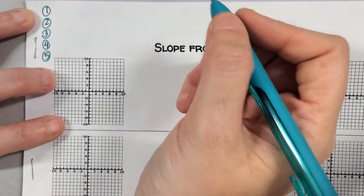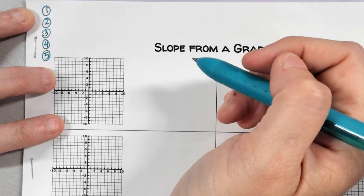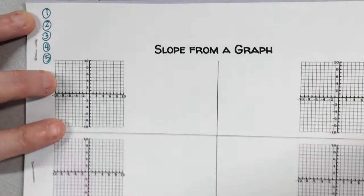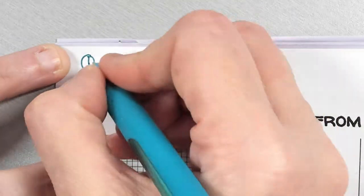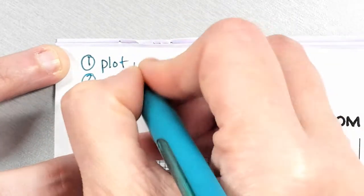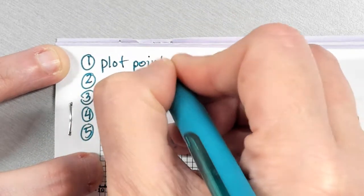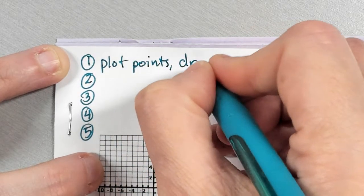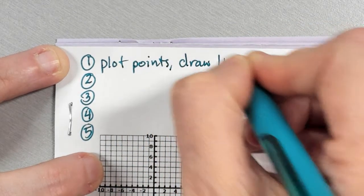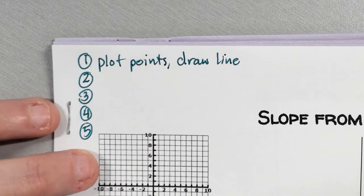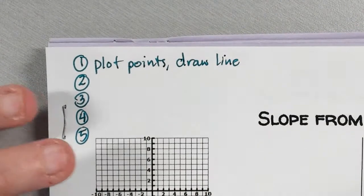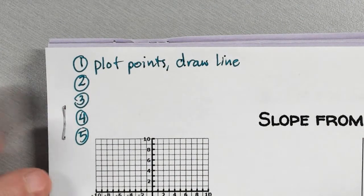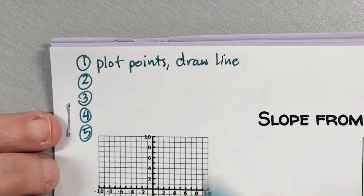We're going to write the steps down and then I'll go through a couple of problems and show you how to use them. Step one: plot points, draw line.